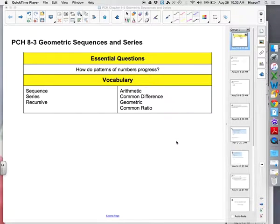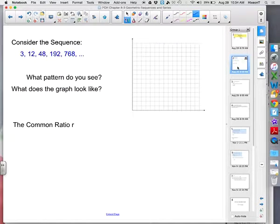We've been looking at how numbers progress and finding those patterns. You won't need your laptops anymore so you can put those away. We've looked at most of the vocabulary for the week. Today we're going to look at these last two terms, the common ratio, which is really what defines a geometric sequence or series.